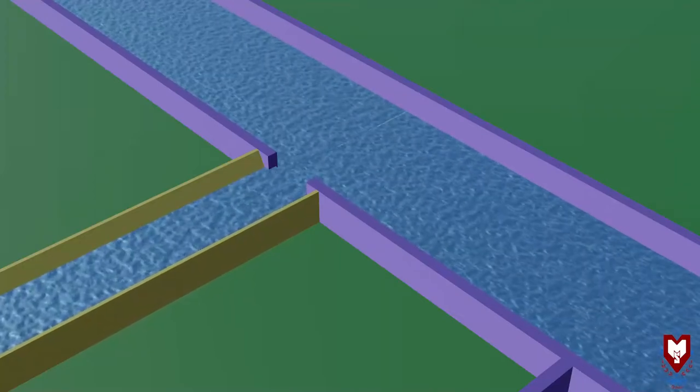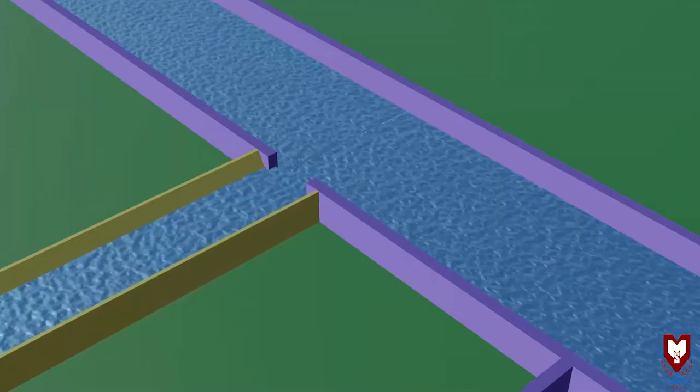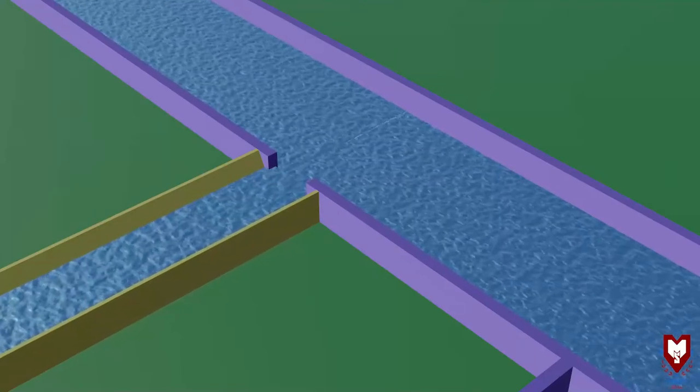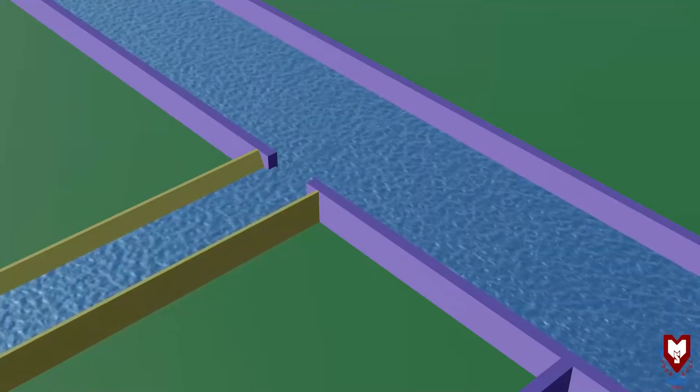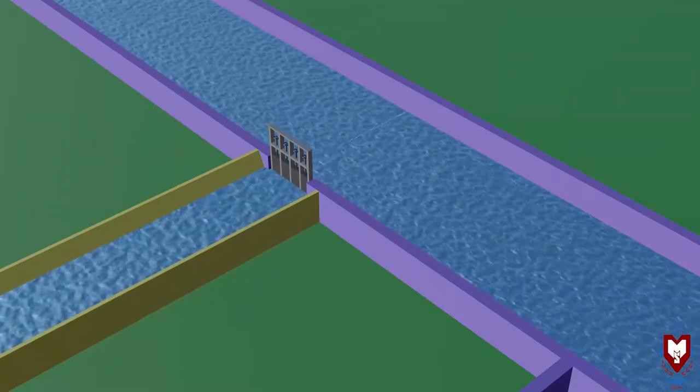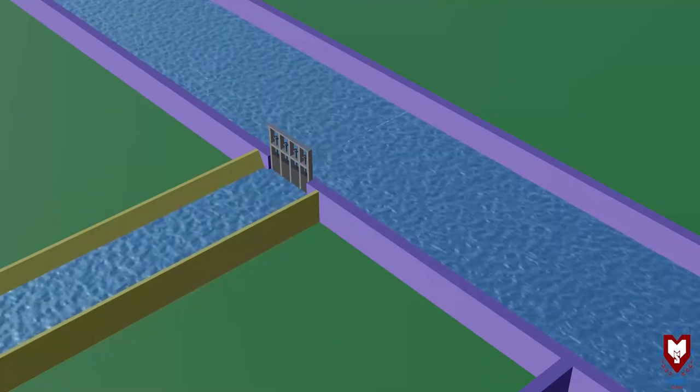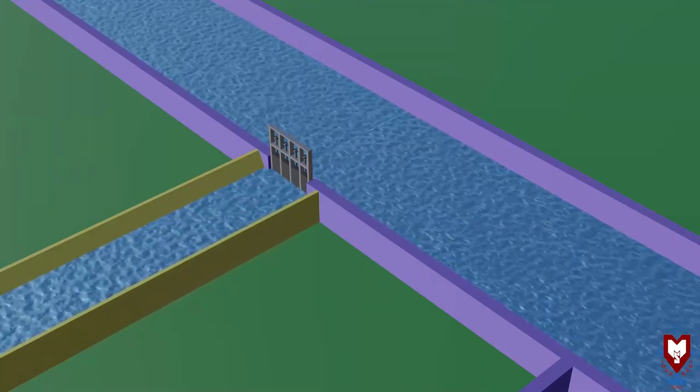silt will enter the canal, which will reduce the canal's capacity. Considering these factors, at the canal and river intersection, we build a headwork. We call it diversion headwork - components built to divert river water into the canal.